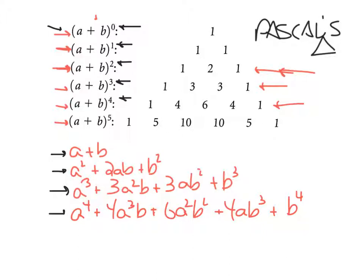Second pattern: the exponents on the first variable, like the a, get smaller as you go. Looking at the lines: a squared, a one, no a; a cubed, a squared, a one, no a; a four, a three — the a's are going down. And look what's happening with the b's: no b, one b, two b's; no b, one b, two b's, three b's — the b's are going up. So we have three patterns so far: one more term than the main exponent, first term exponents decreasing by one, second term exponents increasing.